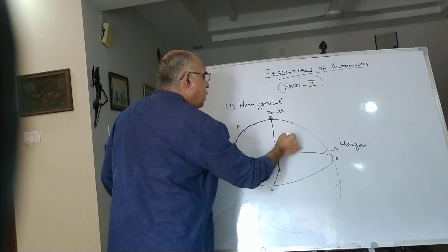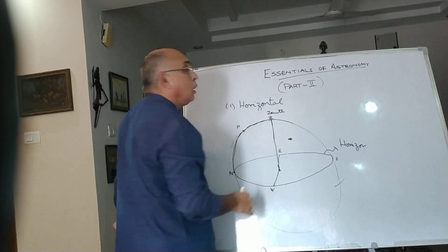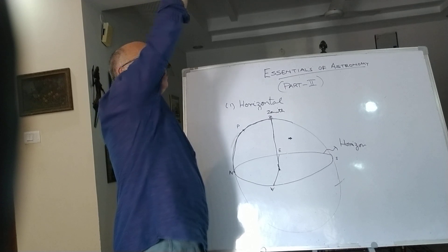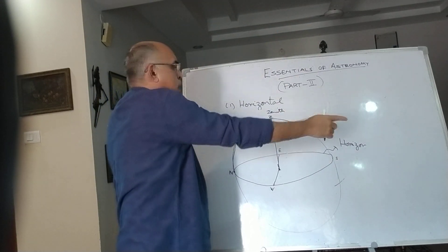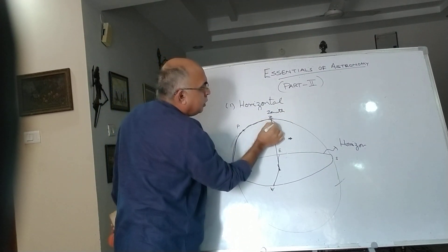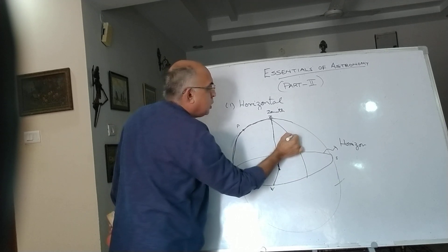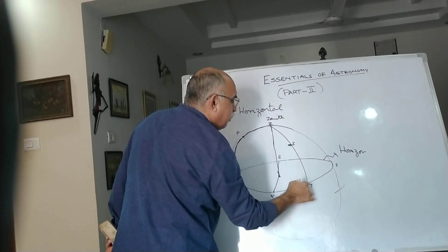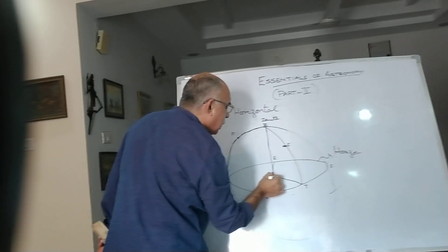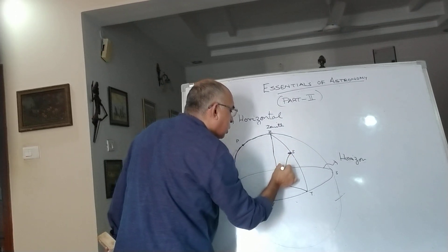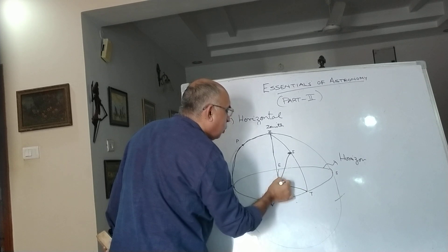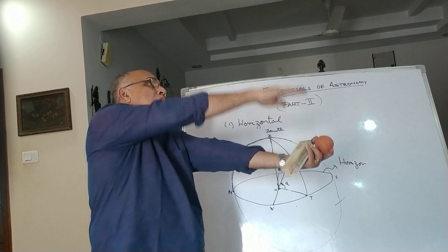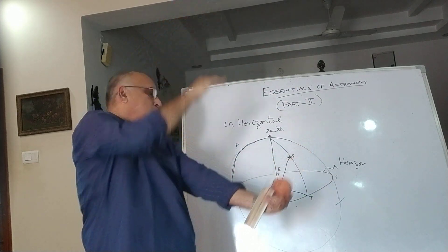If you have any object — say this point S — you draw a great circle passing through it and meet the horizon at point T. The angle OTS is called the altitude. It gives you the angle of the object above the horizon.